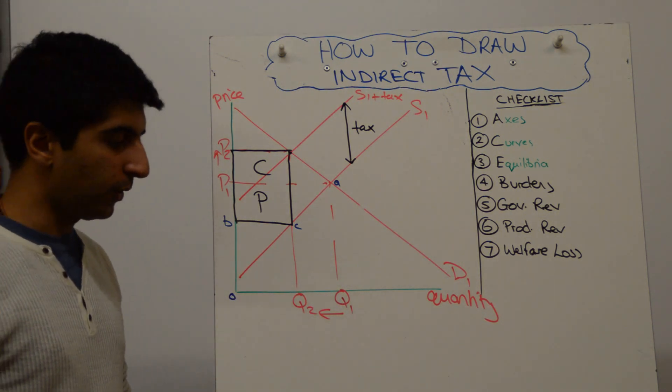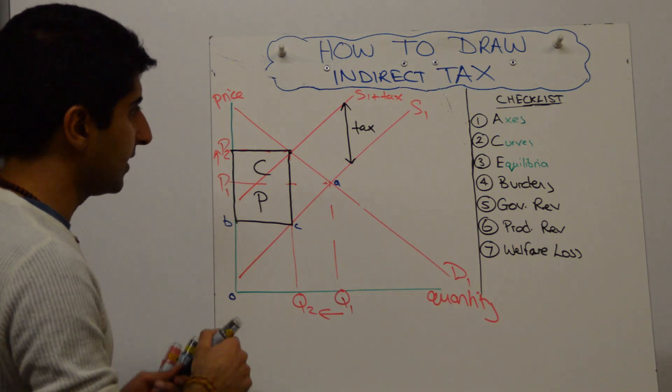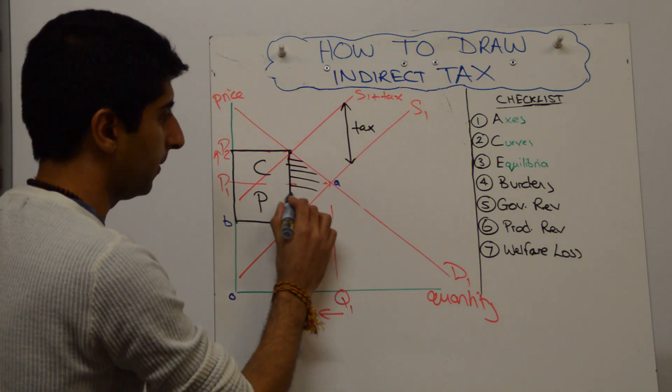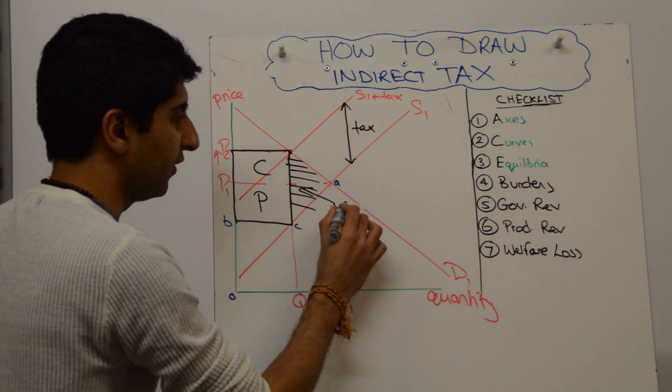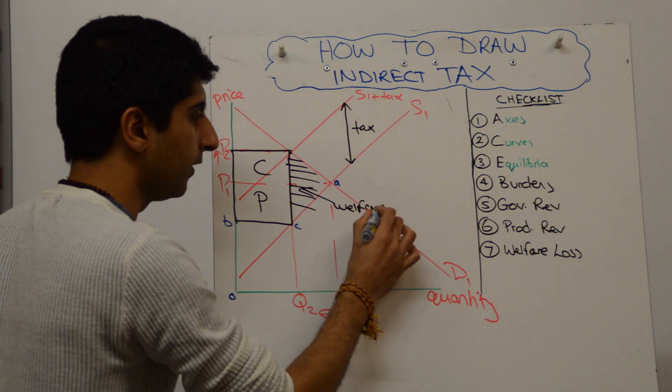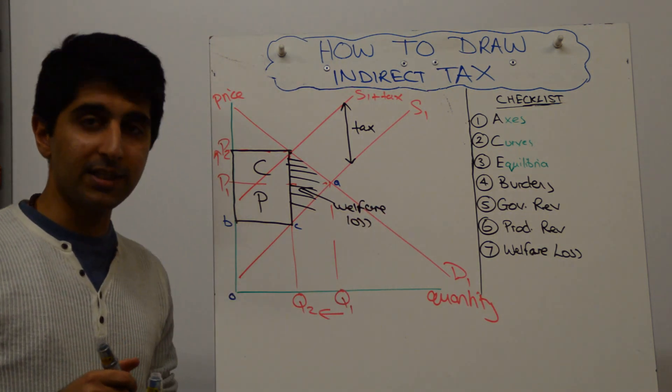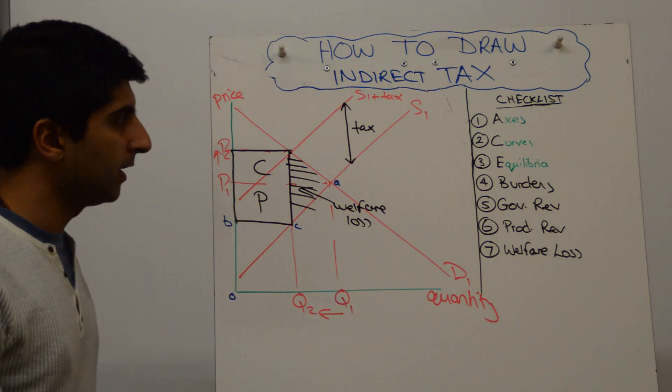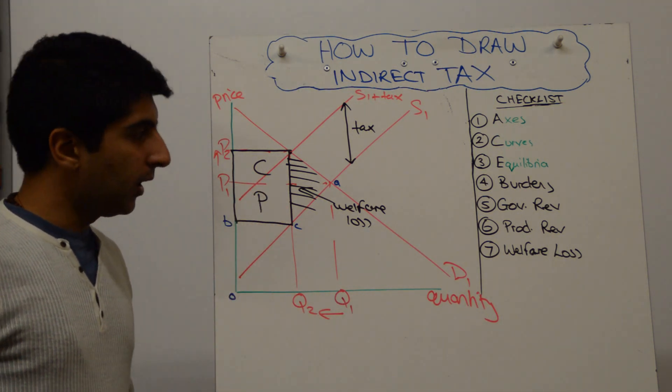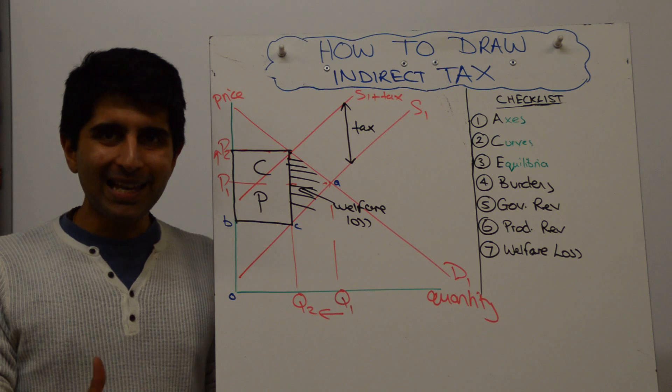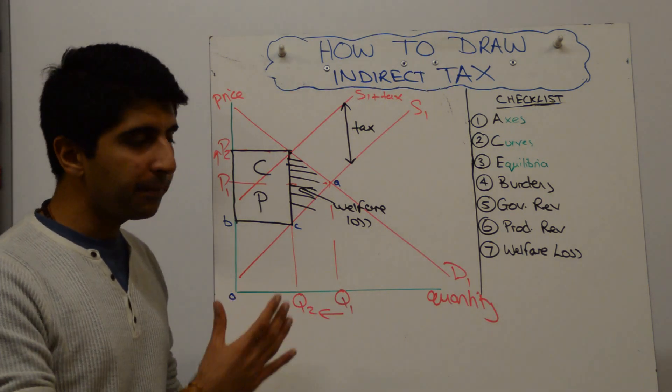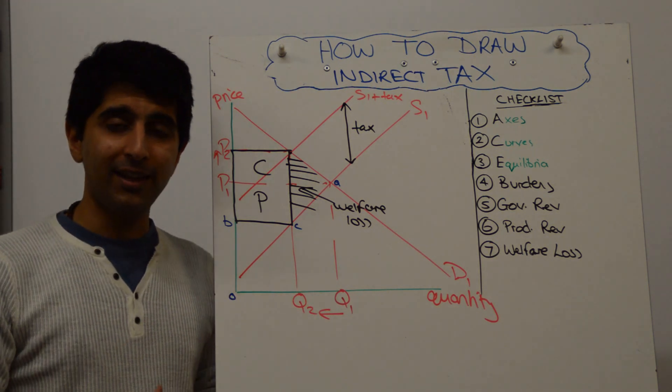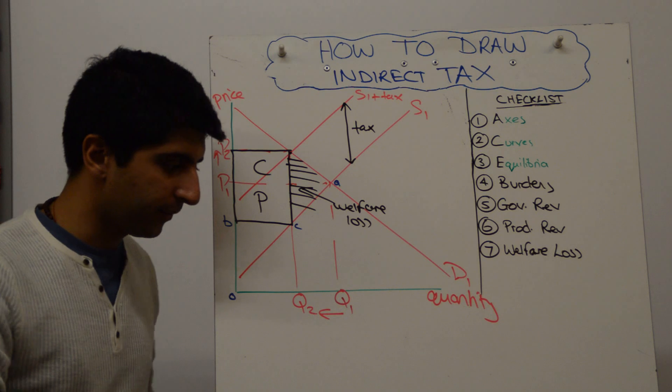And the last thing to show is the welfare loss. And that is this black triangle here. So for a detailed understanding of why all of these things are where they are, watch my video. Detailed video on indirect tax. But this is just how to draw it. So you've got your idea there.